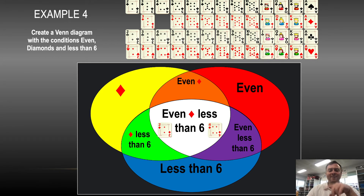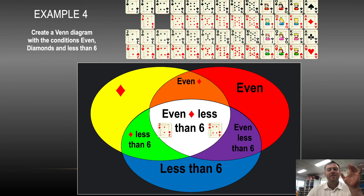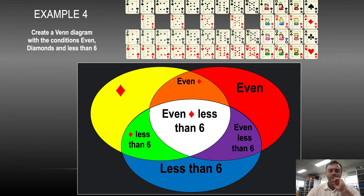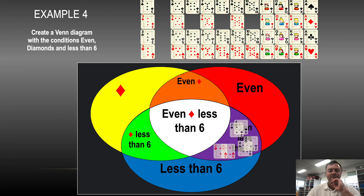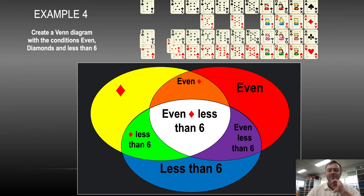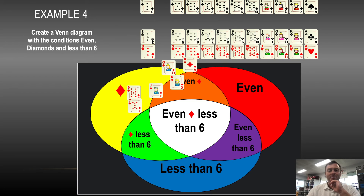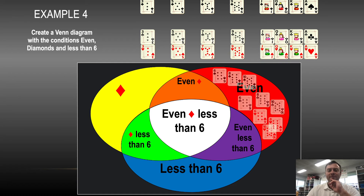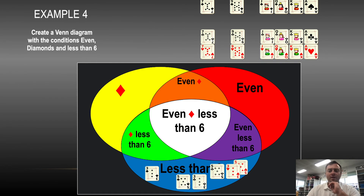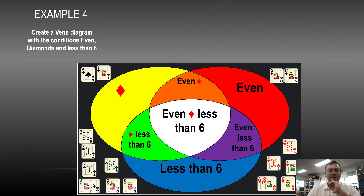So if you had everything that's an even diamond, and a diamond that's less than six — see how that's narrowed the options down. Even diamonds would be that area there. Then you would have even diamonds, even numbers that are less than six, and diamonds that are less than six. Any of the diamonds that are left over go into that little Batman symbol. And then all the even numbers that are left over go in there. And everything that's less than six goes into that space down the bottom. The black area is basically everything that's left over — see how those eight different scenarios happen with that.